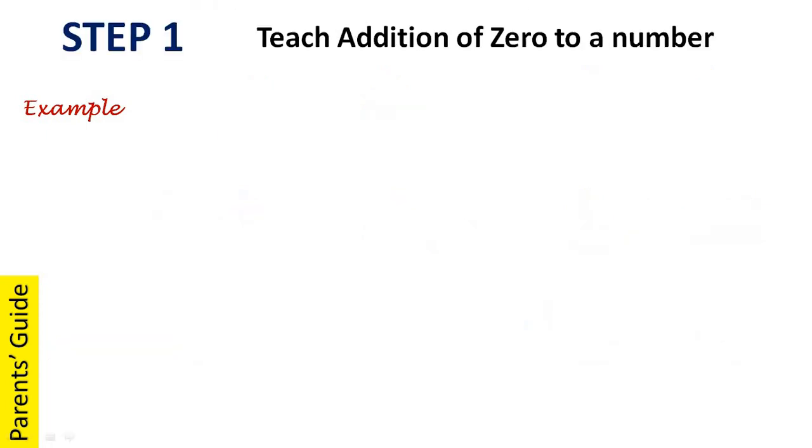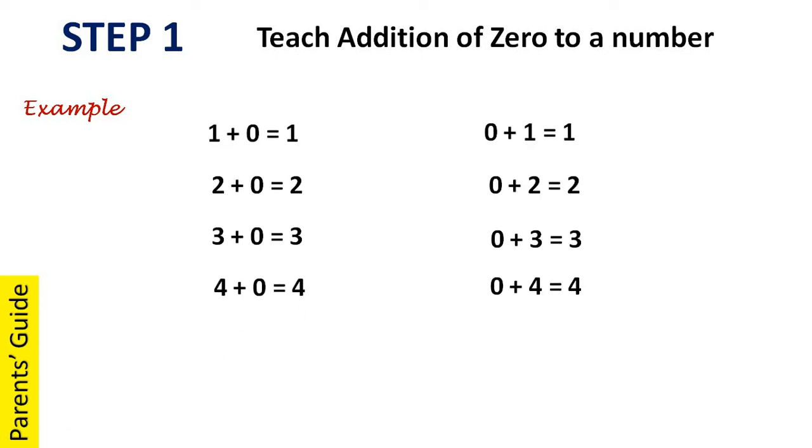In step one of mental maths, you have to teach how to add zero to a number. You have to teach the different combinations. For example, 2 plus 0 is equal to 2 and 0 plus 2 is equal to 2.